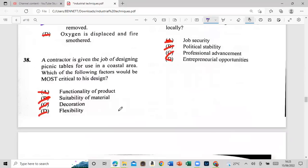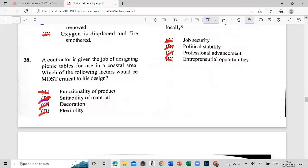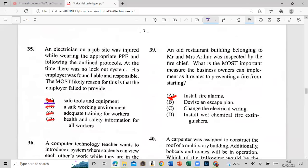Going on fine. We need to go a little bit faster. Let's go, let's go. You guys have an exam to pass. 38: a contractor is given the job of designing a picnic tables for use in the coastal area. Which of the following factors would be most critical in this design? One, A: functionality of the product. B: suitability of material. C: decoration. E: flexibility. And that is suitability of the material. You can't just use any material, right, guys? So some more and reasonable questions. All right, let's move on to 39 minutes. Let's go.